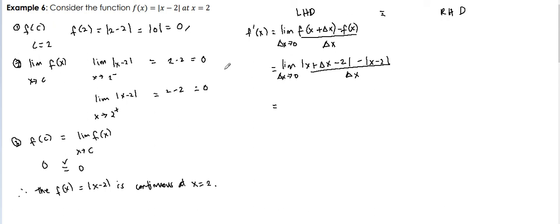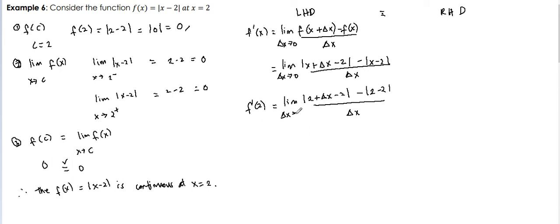Since our given value is x equals 2, we substitute to get the limit of the absolute value of 2 plus delta x minus 2, minus 2 minus 2, all over delta x, as delta x approaches 0. So 2 minus 2 is 0 and 2 minus 2 is 0. What is left is the absolute value of delta x, divided by delta x, as delta x approaches 0.